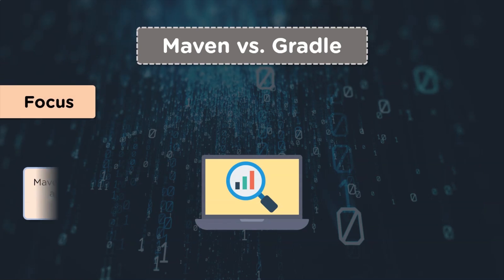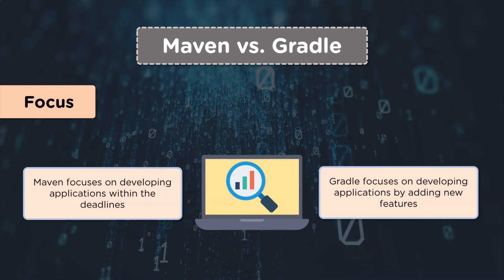The second point is focus — what do these two tools focus on? Maven simply focuses on developing applications within the time deadlines provided. Whereas in the case of Gradle, there may be new features that might be added to the application while it is being built or developed.